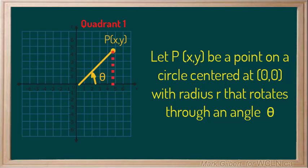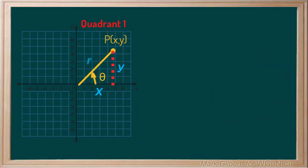We can then make a triangle with the x-axis. The sides of the triangle are made up of the x and y values of our point P. The terminal arm is the radius of the circle r.